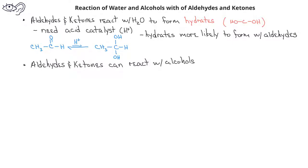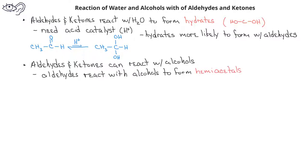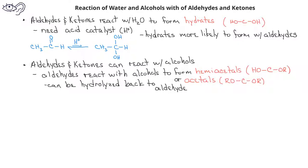Aldehydes and ketones can also react with alcohols. If an aldehyde reacts with an alcohol in the presence of an acid catalyst, we can get what's known as a hemiacetal — a tetrahedral intermediate that has one hydroxyl group and one alkoxide group bonded to the same carbon. If two equivalents of alcohol are present, the aldehyde can form an acetal, which has two alkoxide groups bonded to the same carbon. Hemiacetals and acetals are stable in the absence of hydrogen ions and water, but in acid with excess water, they hydrolyze back to the aldehyde. We'll see examples of hemiacetals and acetals when we learn about carbohydrates.